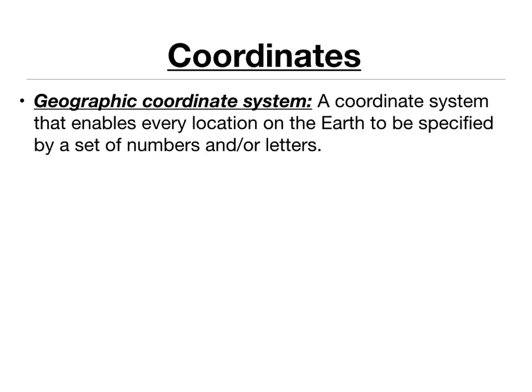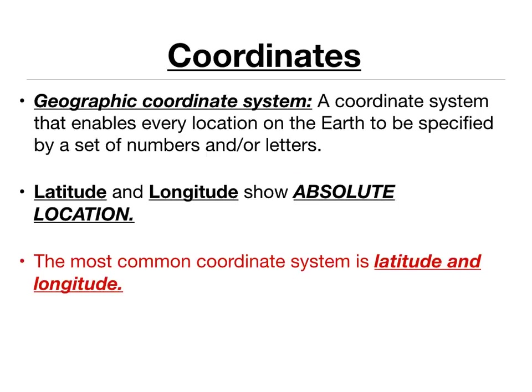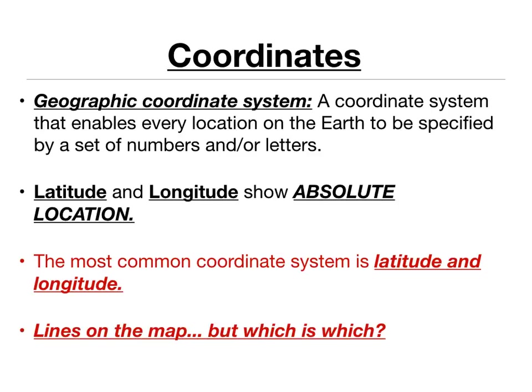Moving on to the next topic: coordinates. The geographic coordinate system is a system that enables every location on the Earth to be specified by a set of numbers and/or letters. The one we're most concerned with today is called latitude and longitude. That system will show us our absolute location on the Earth and it's the most common coordinate system. These are represented as lines on a map.